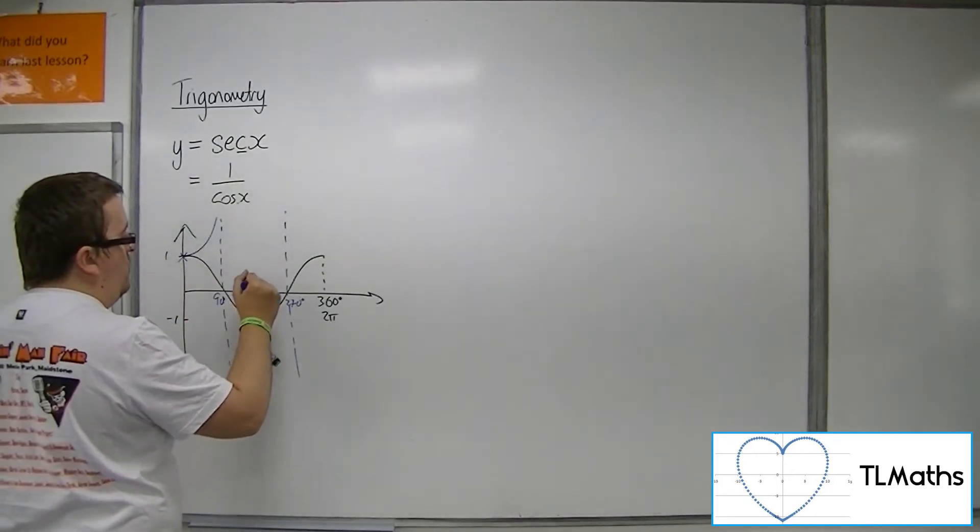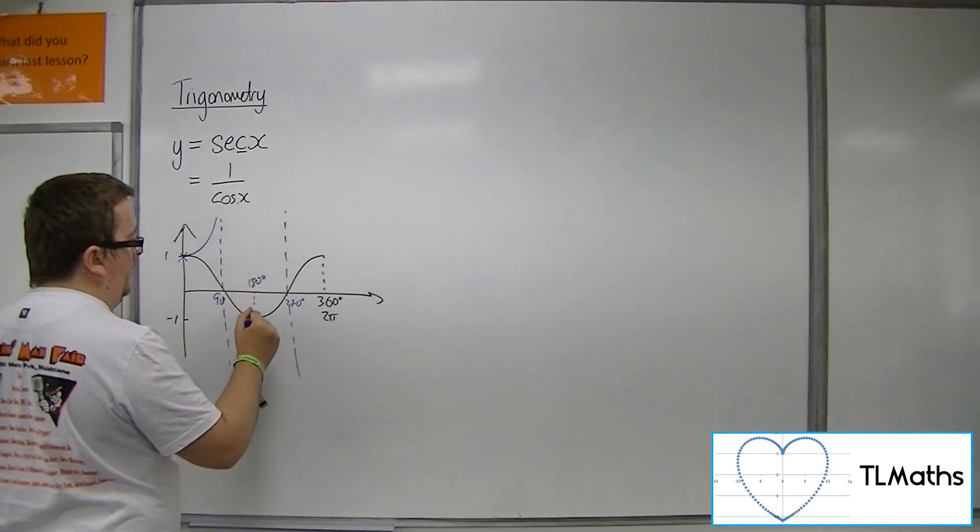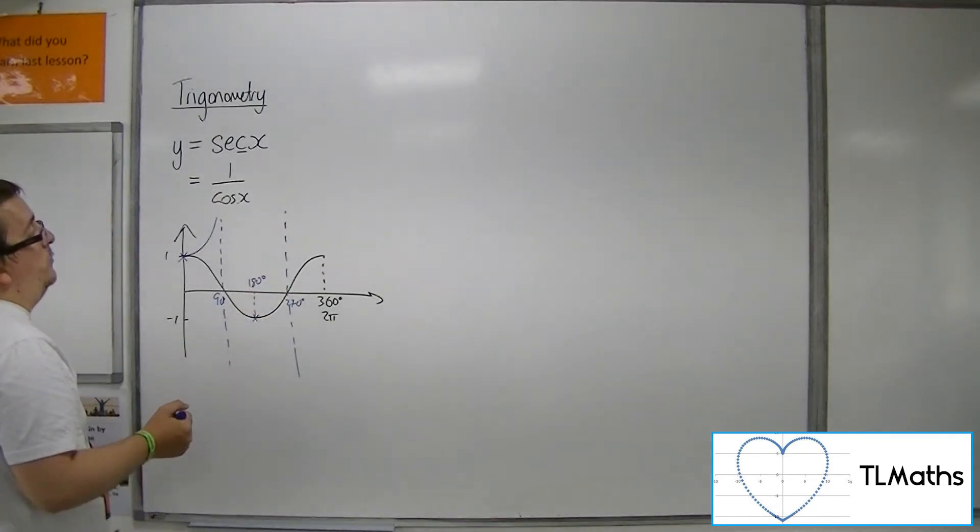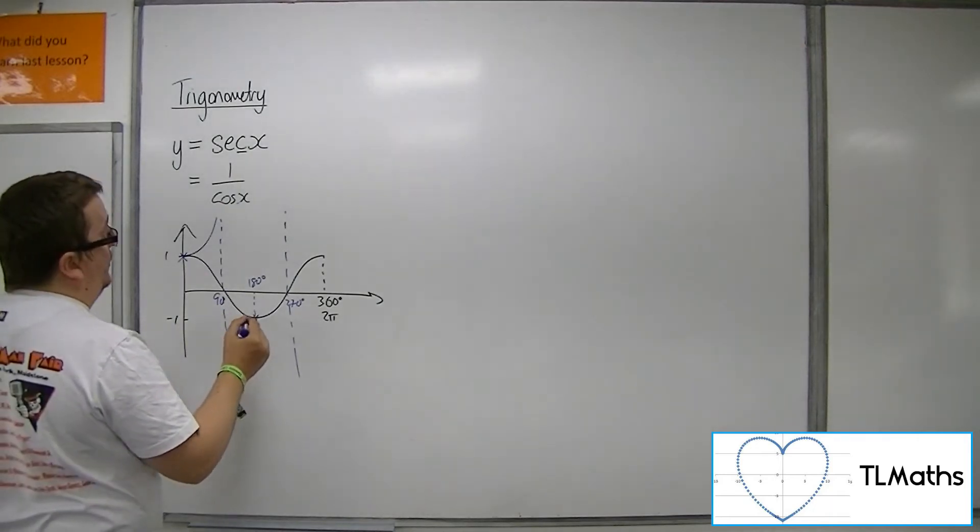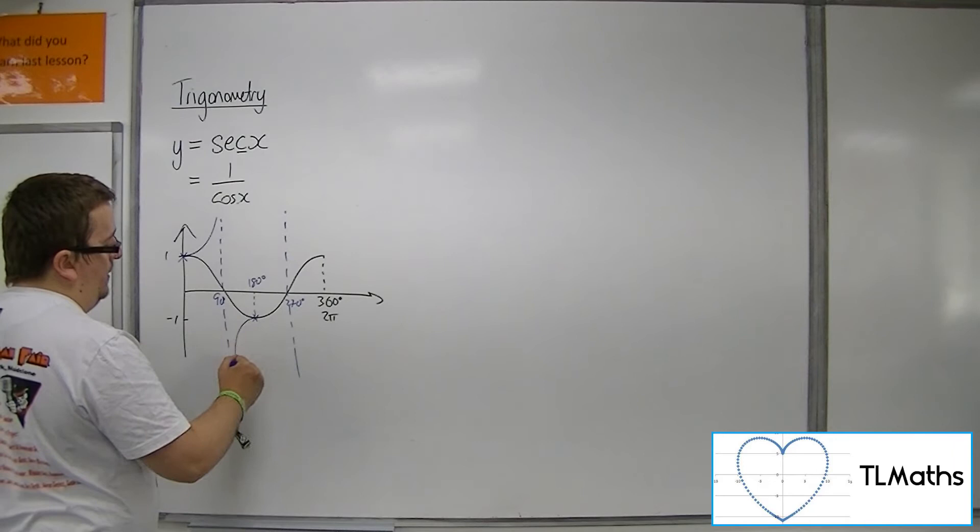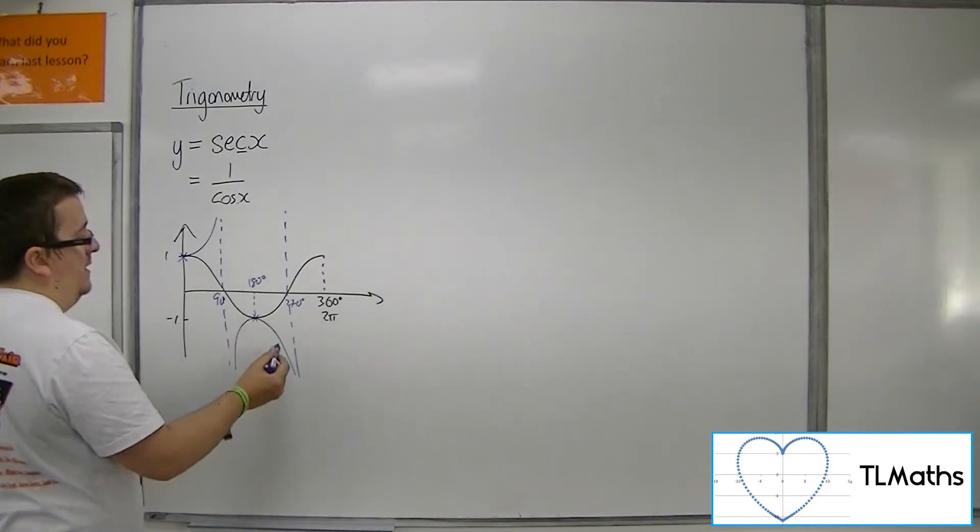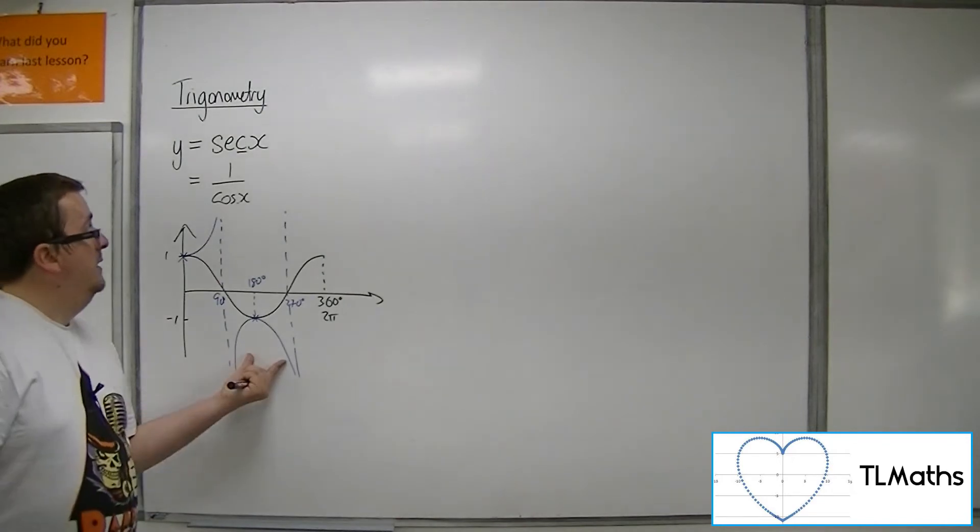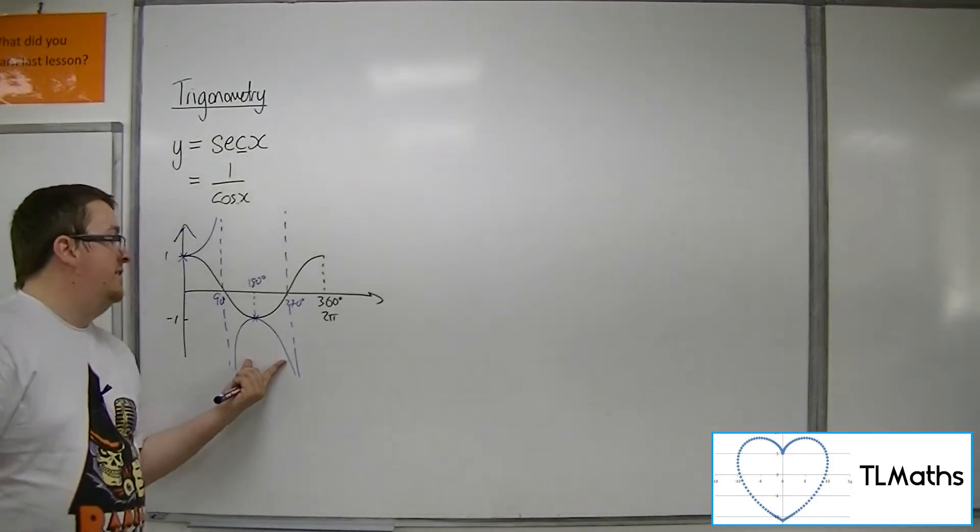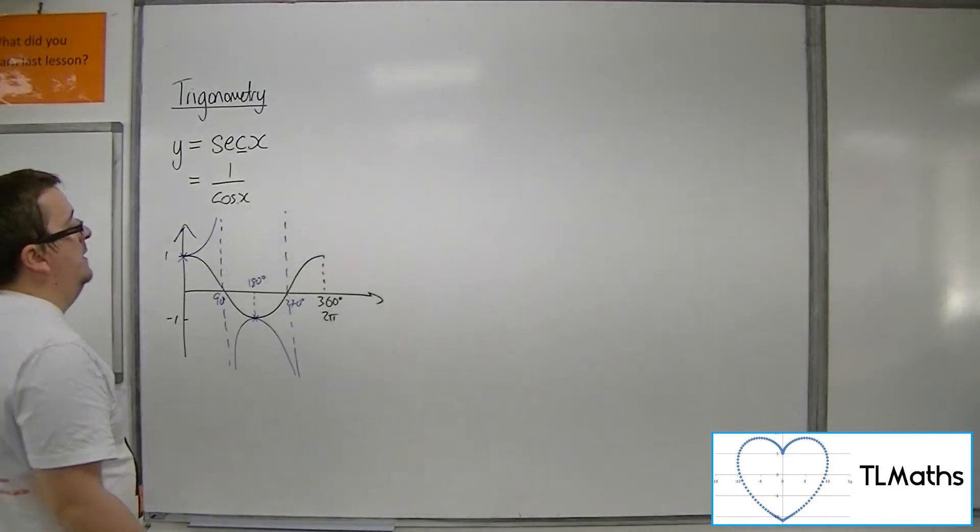When we're at 180 degrees, cosine is minus 1, so 1 over minus 1 is minus 1. The sec curve must go through that point as well. In a similar way, because cosine is negative between 90 and 270, sec must be negative between 90 and 270 as well.